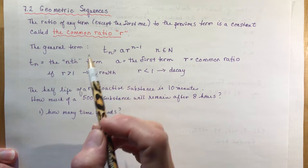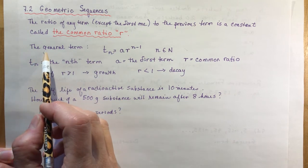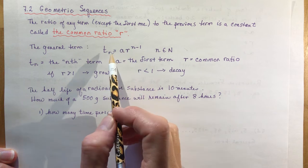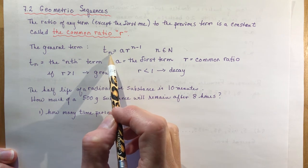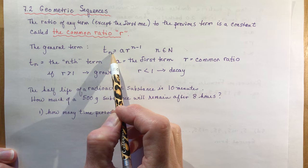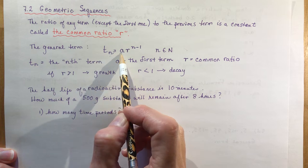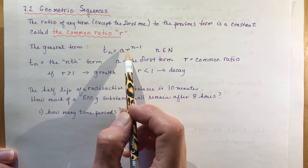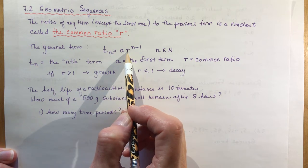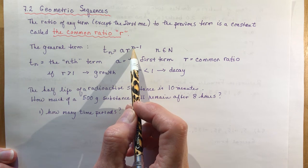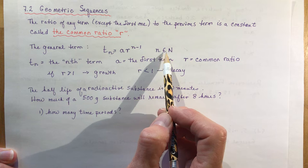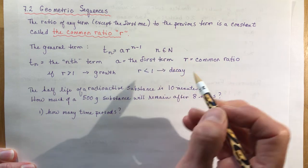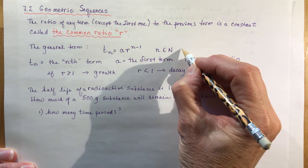It's always one term divided by the term just before it. The general term for the geometric sequence is tn — the nth term — equals a, which is your first term, times r, which is your common ratio, to the power of n minus 1, where n is an element of the natural numbers.